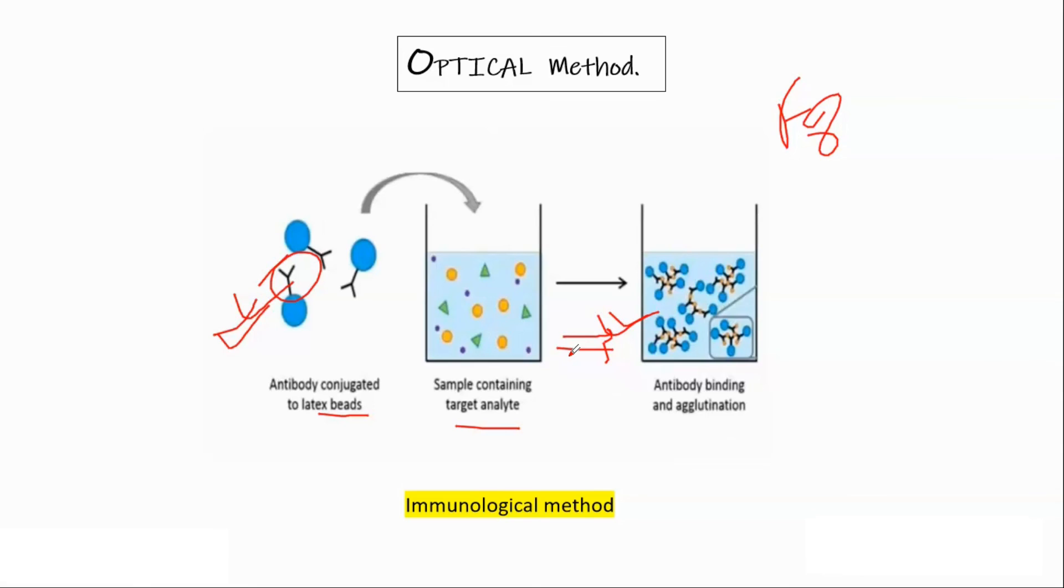So these different methods are basically to get different things. Like in APTT or PT what we will need to know is actually the time. What is time for prothrombin time or what is activated partial thromboplastin time. But in case of fibrinogen we will want to know the concentration of fibrinogen like 250 mg, 230 mg. In case of activated protein C we want to know the percentage, how much protein C is activated present in the plasma. So all these different methods are present in combination or in separation depending on the instrument you are using.